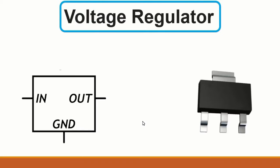Then we have the SMD voltage regulator with three terminals. Basically it has four terminals but one is connected internally, so effectively three. The symbol shows input, output, and ground. This component regulates voltage - for example, 12V input gives 5V output, or 5V input gives 3V or 2V output.